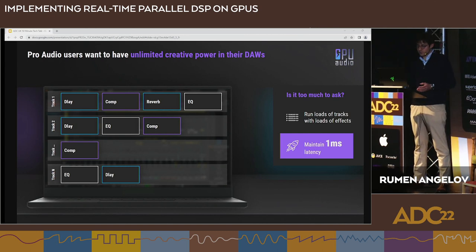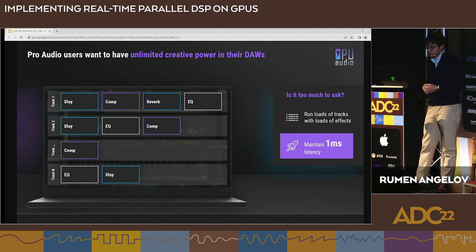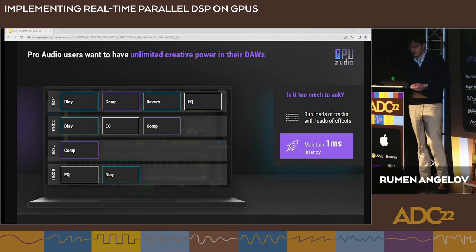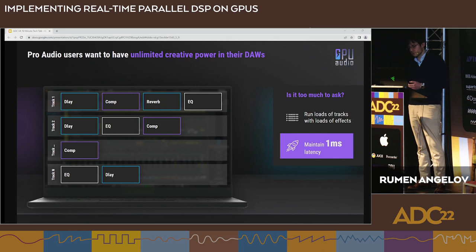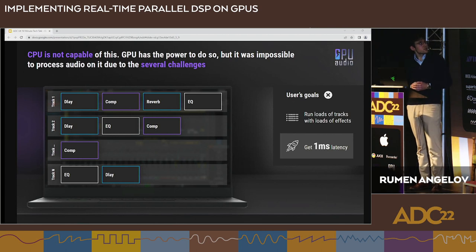A lot of the problems people have with DSP on CPU are dropouts, high latency, and overloads. Sometimes we need additional hardware to get the speeds required for day-to-day processing tasks. We also sometimes need to freeze tracks, giving up the flexibility that plugins can offer. The CPU is simply not that efficient when it comes to DSP algorithms.